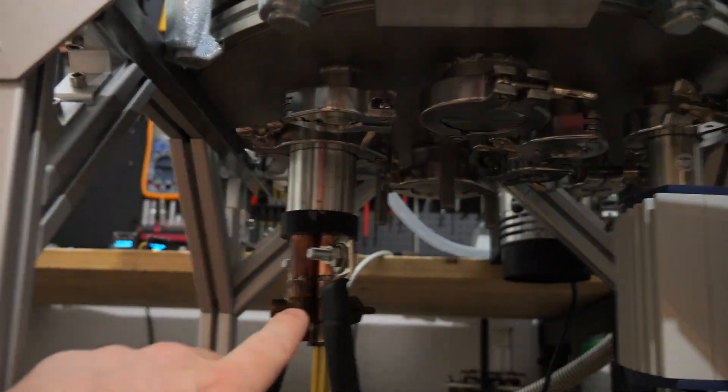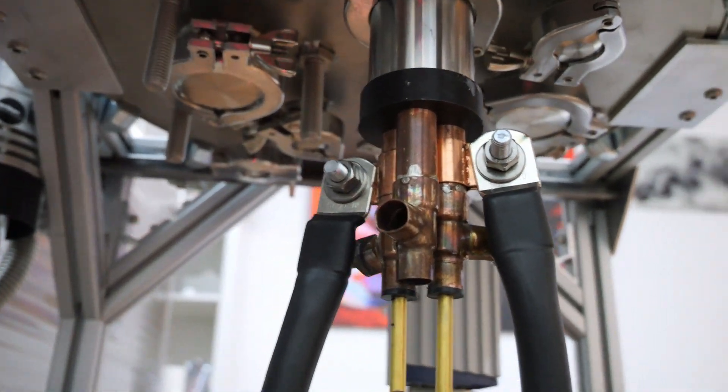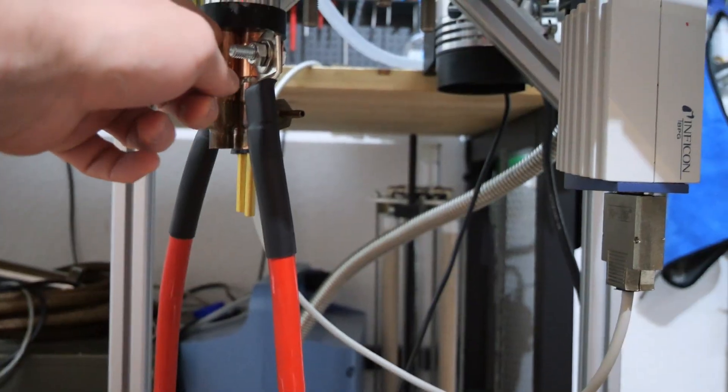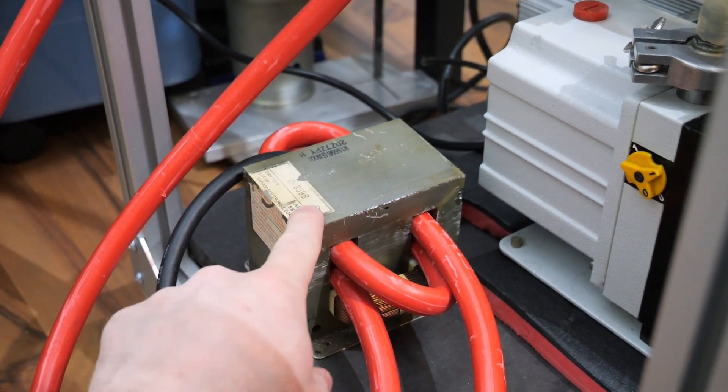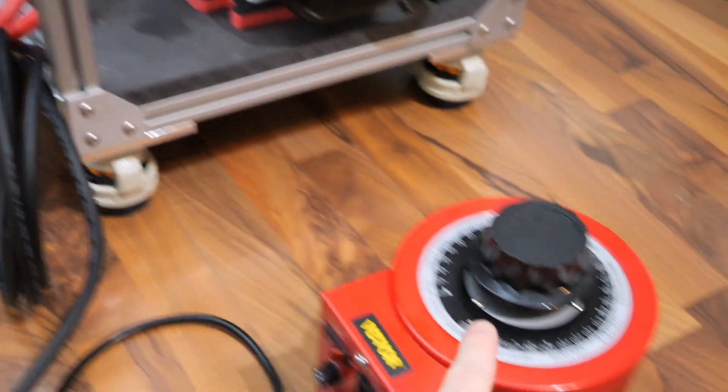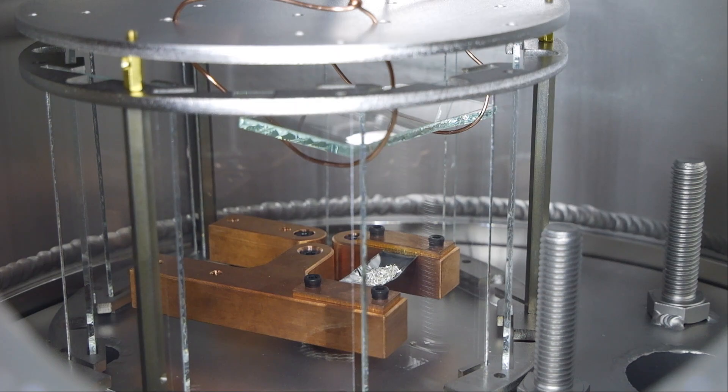I have everything connected down here. As you can see, the water cooling is not connected because in a previous test without any metal inside the crucible, it turned out that the copper rods do not get hot at all. I have my rewound microwave oven transformer connected. And the transformer itself is connected to the variac down here so I can control the power. Let's see what happens.